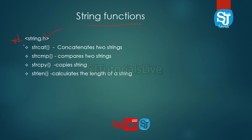The string functions include: first, strcat; second, strcmp; third, strcpy; fourth, strlen. The strcat function is used to concatenate two strings — for example, combining first string "hi" and second string "hello". The strcmp function is used to compare two strings.